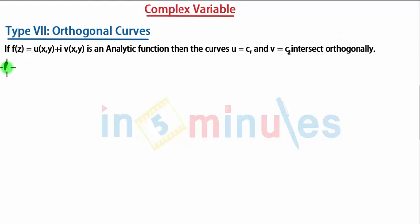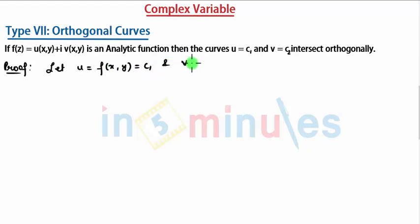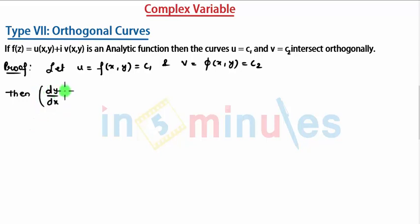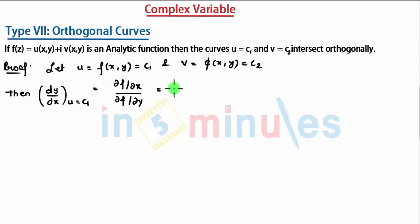We need to check and prove this. Let u = f(x,y) = c1 and v = φ(x,y) = c2. If we find dy/dx at u = c1 by direct differentiation, we can write it as minus of (∂u/∂x) divided by (∂u/∂y). Students should have knowledge of partial differentiation for this.